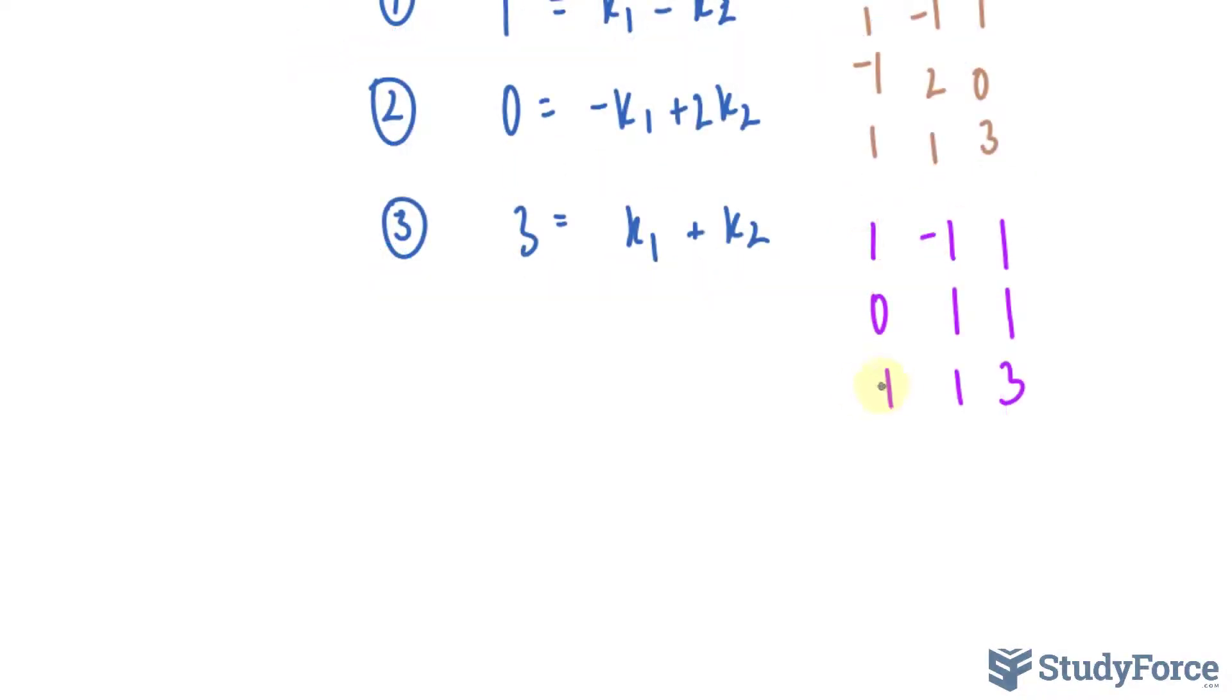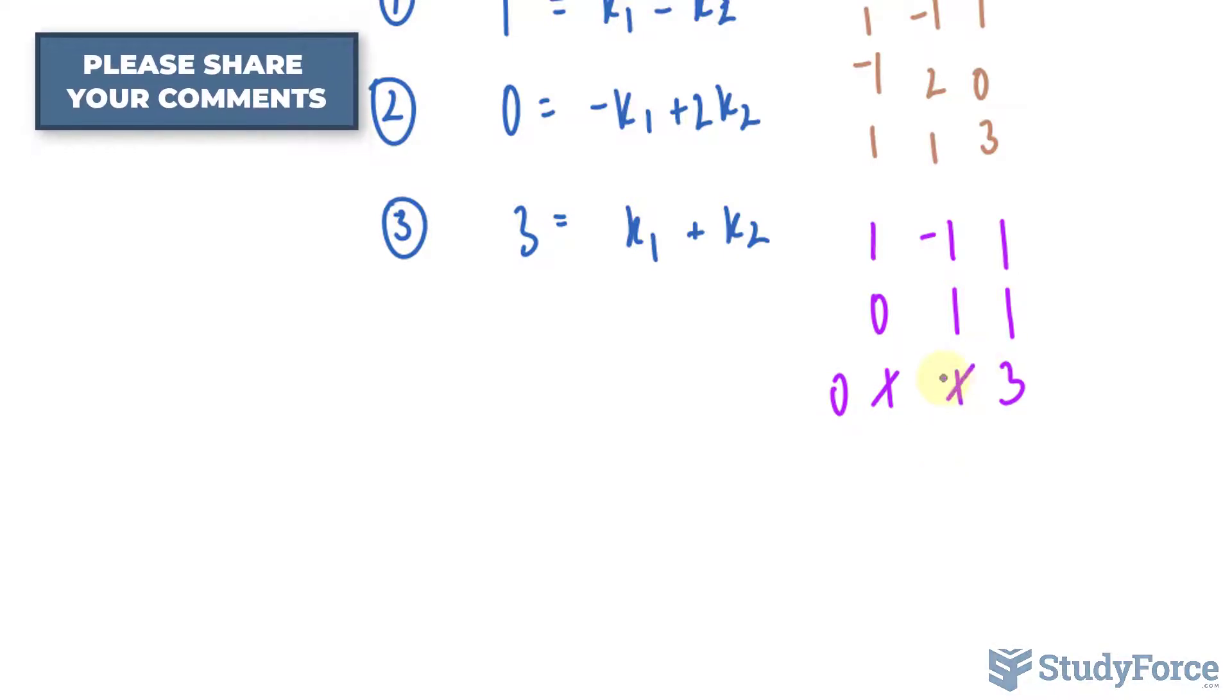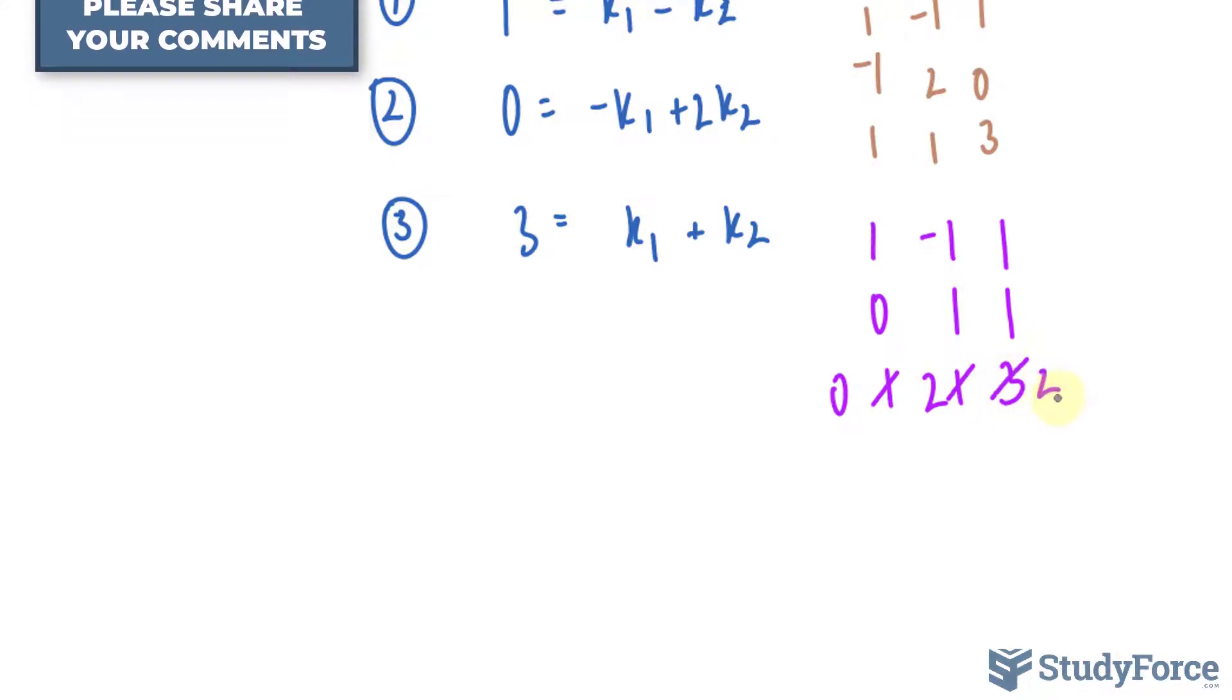And now to make these zeros, I'll subtract row 3 from row 1. So 1 minus 1 is equal to 0, -1 minus 1 is -2, and 1 minus 3 is -2. The last step will be to multiply row 2 by a factor of 2 and subtract it from row 3. This gives us 0 here and 0 here.